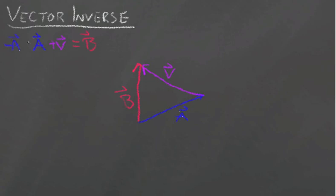So now we use our inverse vector. So we see that V is just B - A, since those two cancel out.